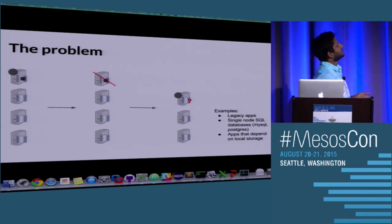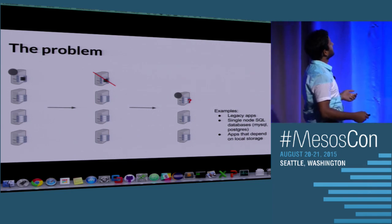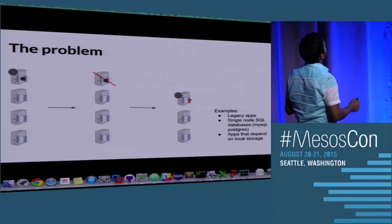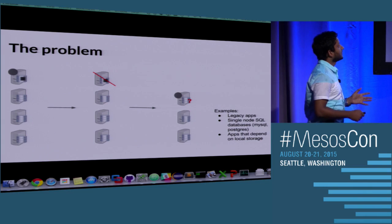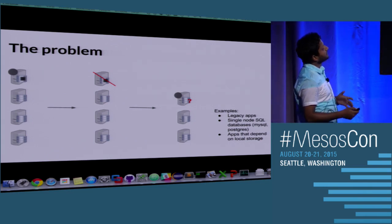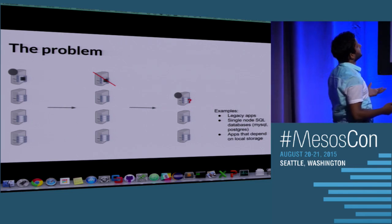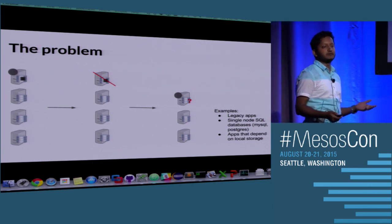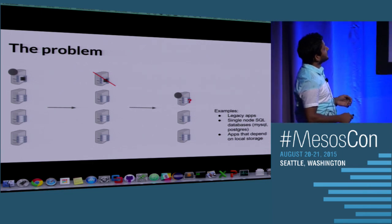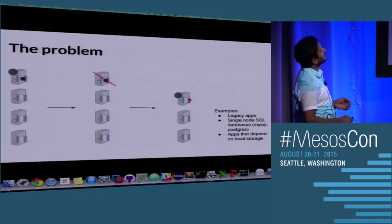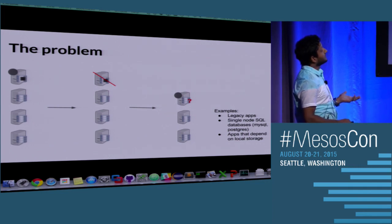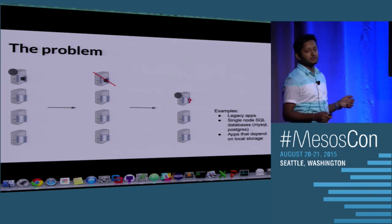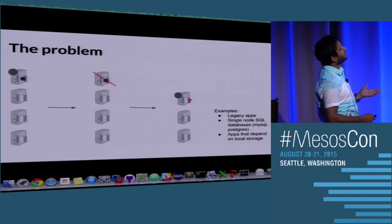The problem is that in Mesos, if we have a process running on one node and that node goes away, the framework would start it back up onto a different node. That's great for stateless processes, but for any process that depends on storage, we obviously have a problem. Examples of these processes are legacy apps, single-node databases like MySQL and Postgres, and apps that depend on local storage.